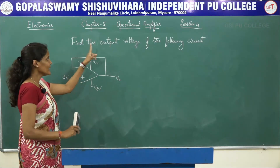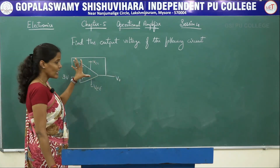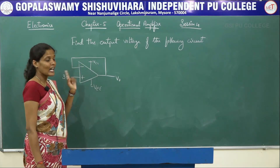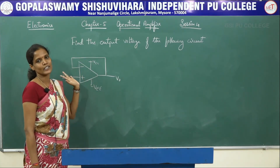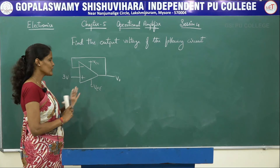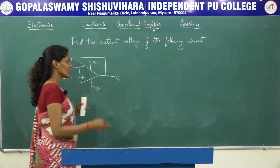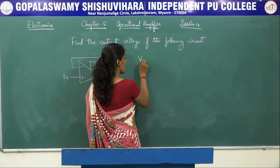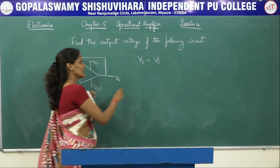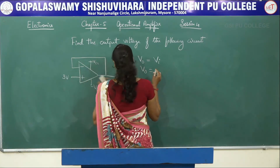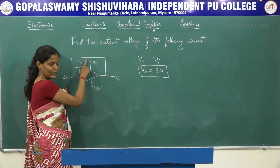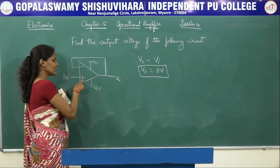This is the third circuit. Find the output voltage of the following circuit. First, analyze the circuit. Rf has been shorted, which means this circuit is a voltage follower circuit. The input voltage is given to the non-inverting input terminal of the op-amp. So this is a voltage follower circuit. The formula is very simple: V0 = Vi. Vi value is 3 volts, so V0 = 3 volts.